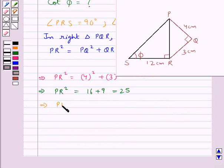This means PR is equal to square root of 25, which equals 5 cm. So we have PR equal to 5 cm.